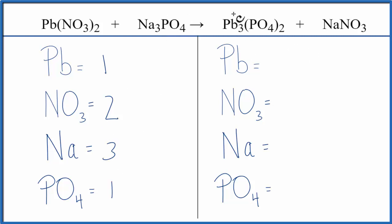On the product side, three leads, one nitrate, one sodium, and one of the phosphates times two. We have two of those.